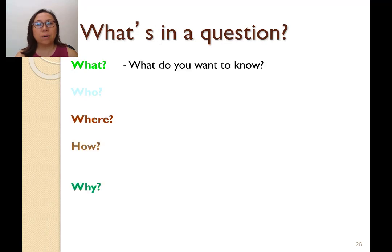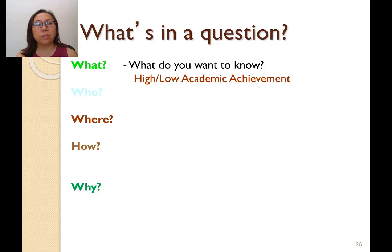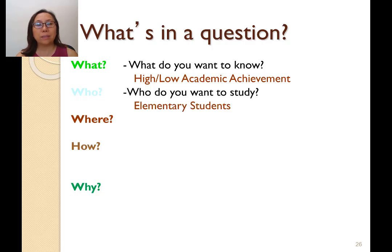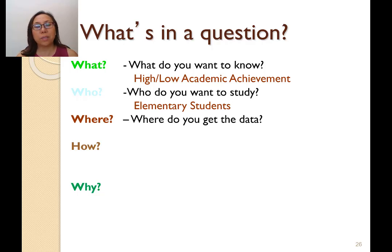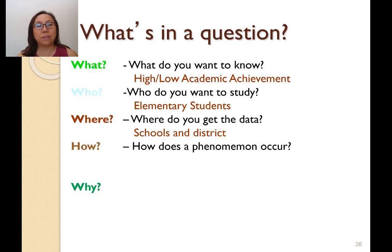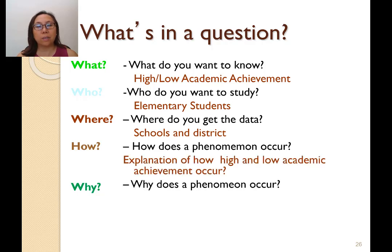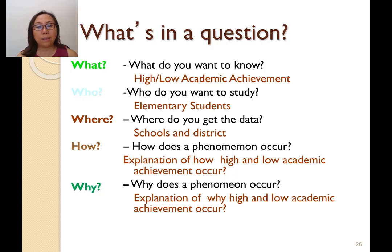In scientific research, the basic questions are: what, who, where, how, and why. For example: What do you want to know — perhaps high or low academic achievement? Who do you want to study — elementary students? Where do you get the data — school and district data? And how or why does a phenomenon occur — how or why does high and low academic achievement occur?